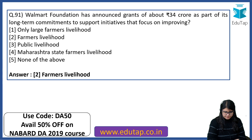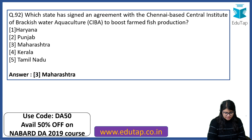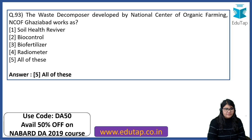Which state has signed an agreement with the Chennai-based Central Institute of Brackish Water Aquaculture to boost farmed fish production? The answer is Maharashtra. The Waste Decomposer developed by NCOF Ghaziabad works as what? The right answer is all of these — it works as a soil health reviver, for biocontrol, as a biofertilizer, and as a radiometer.